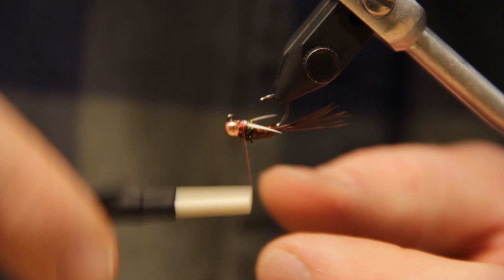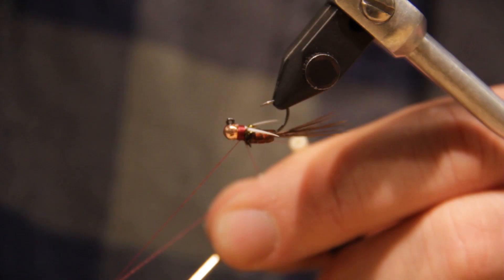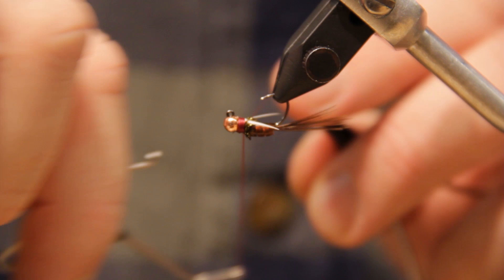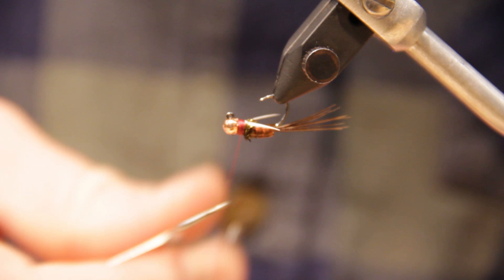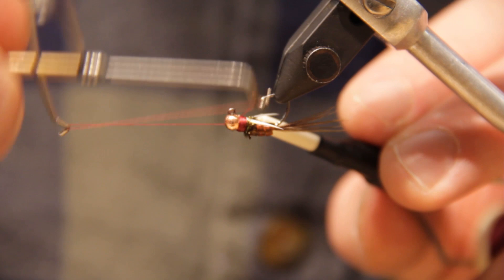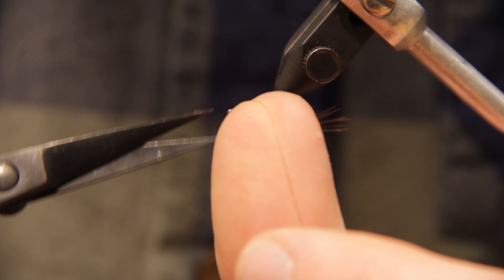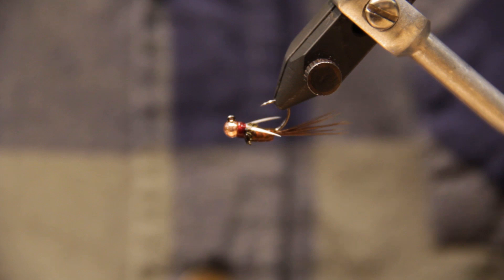And then we're going to take our thread, and we're going to build up a nice little collar. So once those are tied in, I'm going to build up a nice collar with our thread. This is why using a wine claret or a red thread goes a long way. It gives it a nice little bright spot on the fly. Once we whip finish...